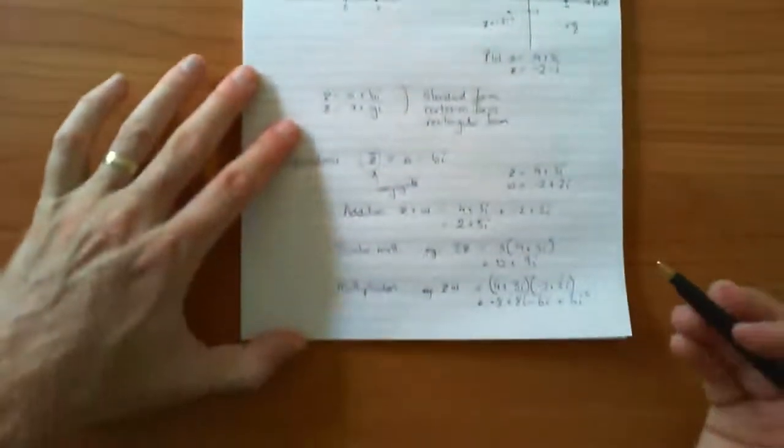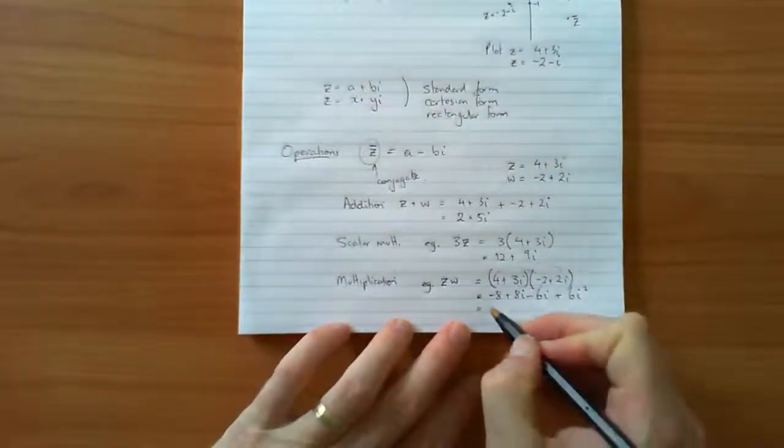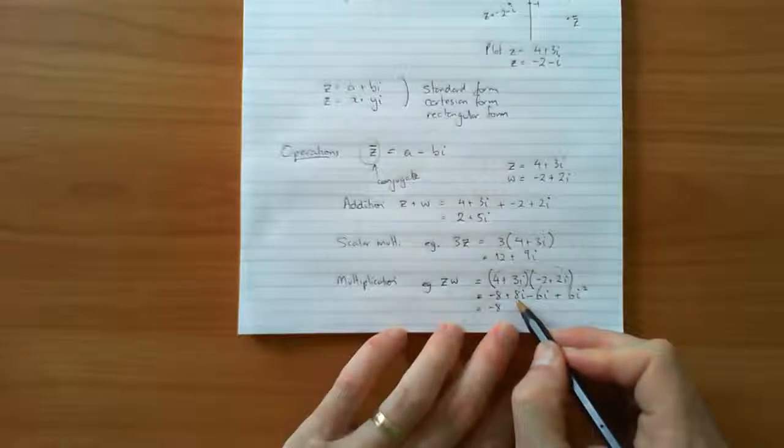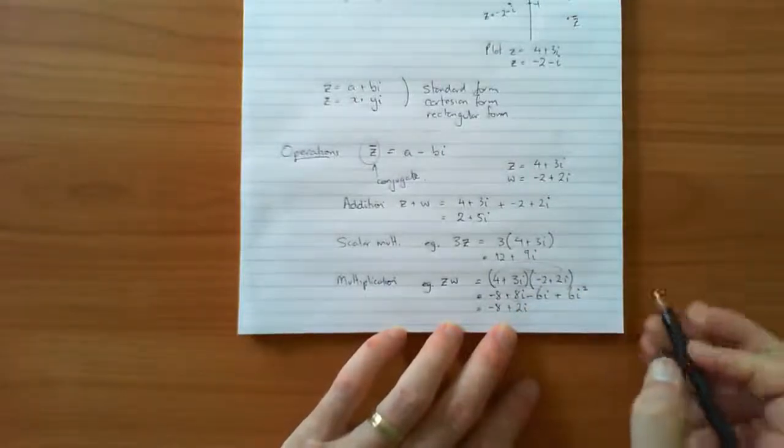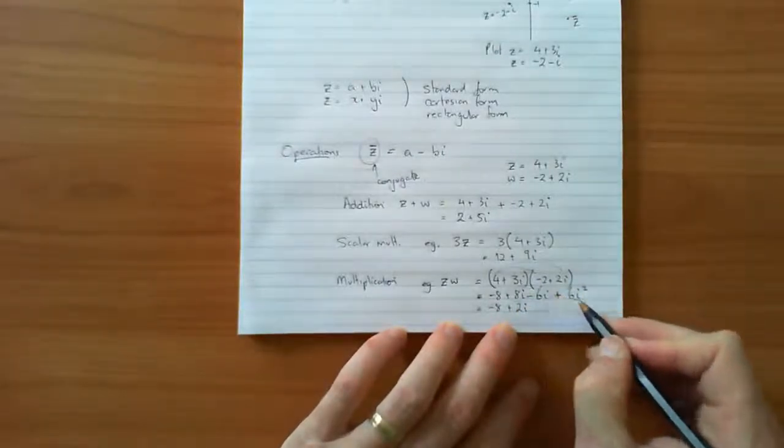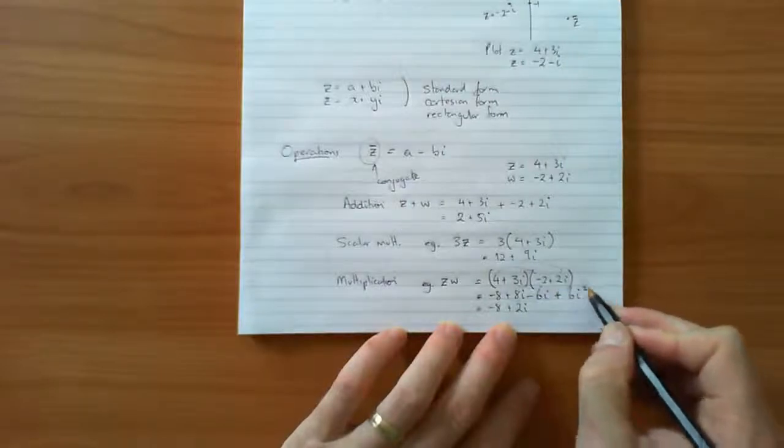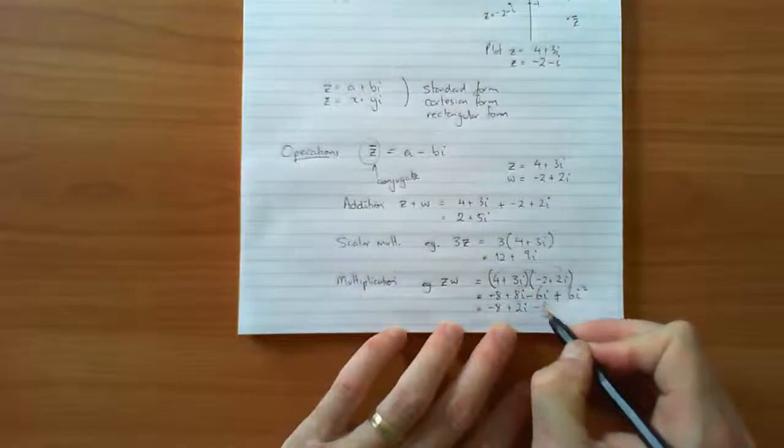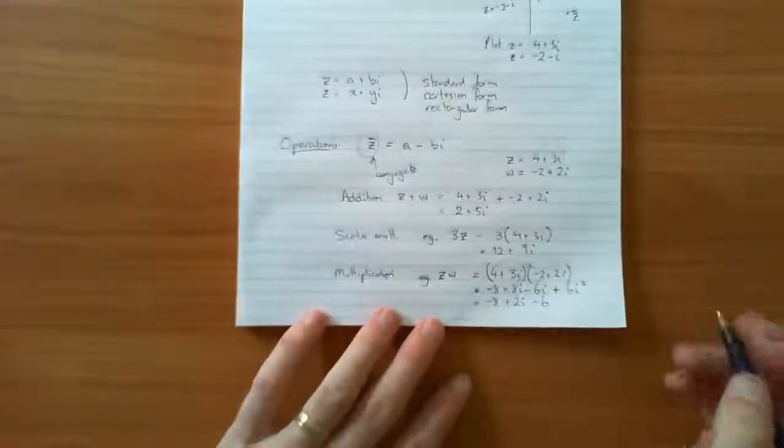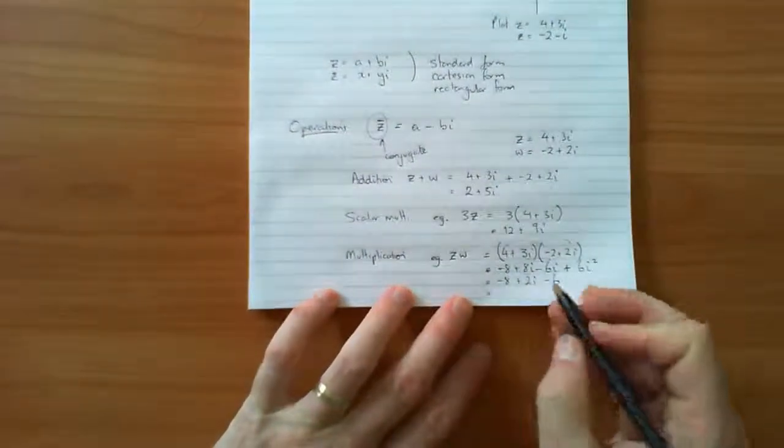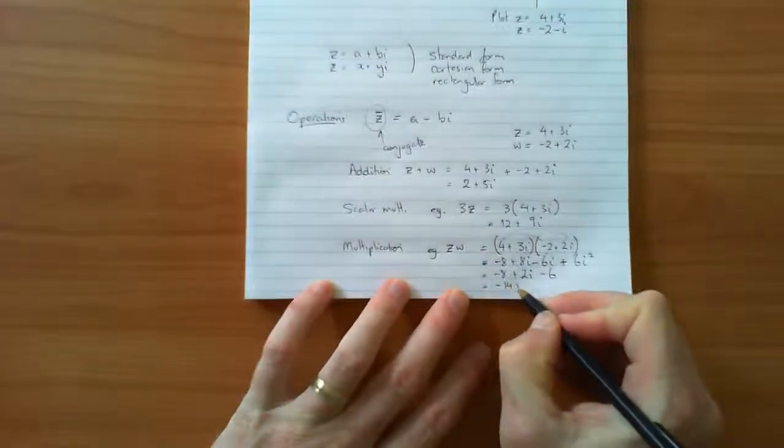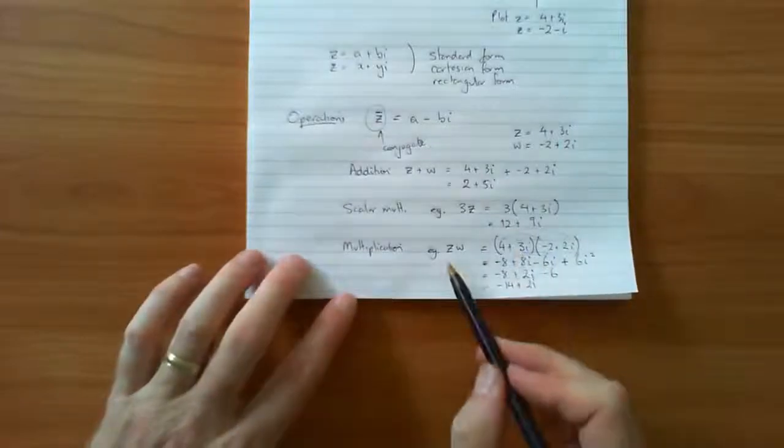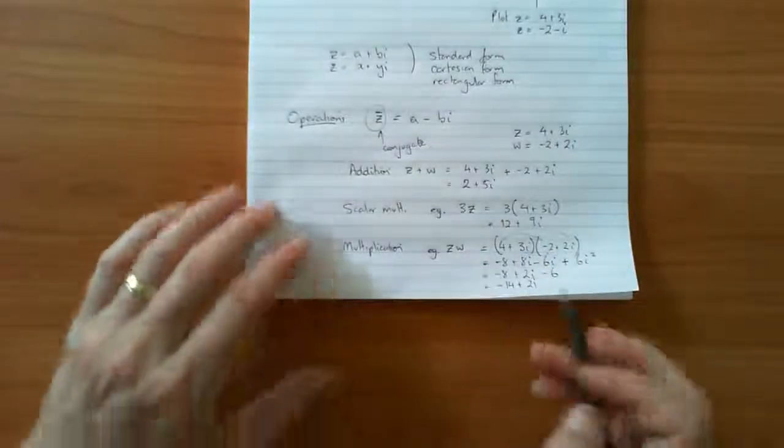So down here we're going to have negative 8. We collect these like terms, 8i minus 6i will be 2i, and plus 6 times negative 1. i squared is negative 1, so that actually becomes negative 6, which then we can simplify: negative 8 take 6 is negative 14 plus 2i. So there is the multiplication of two complex numbers.